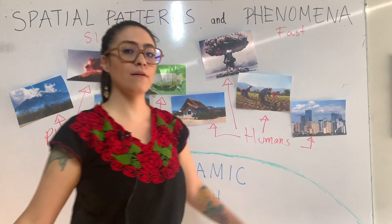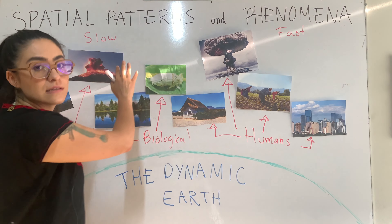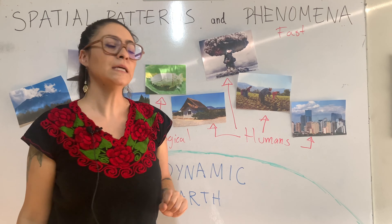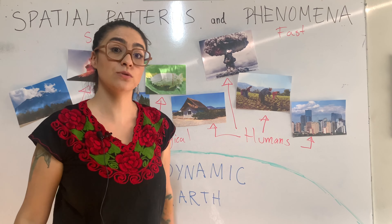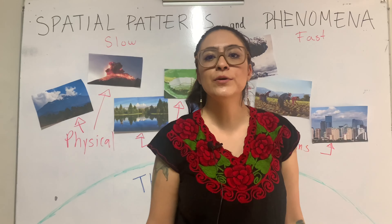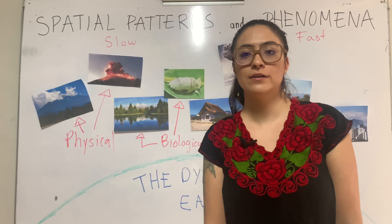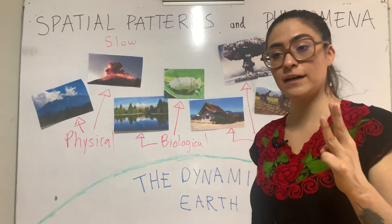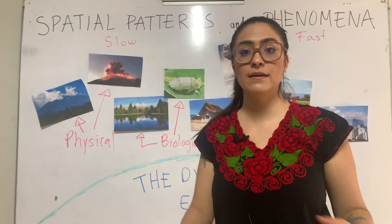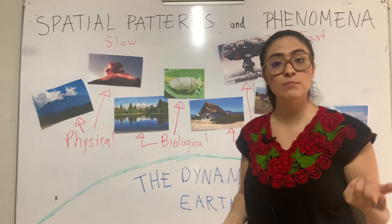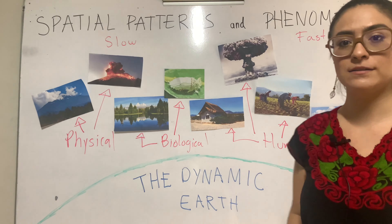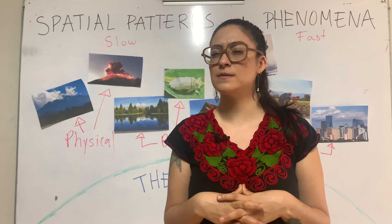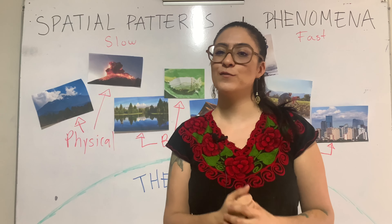Now that we have this classification between slower processes and phenomena — fast processes happening on the planet, like a tsunami that has a beginning and an end — you can answer activity number three in your learning journal using examples of spatial patterns or phenomena. Remember we have three different categories: physical (caused by Earth's dynamic), biological (when organisms are involved), and human patterns and phenomena. The next question will be how we study these spatial patterns or phenomena in geography — that's for the next video. Thank you.